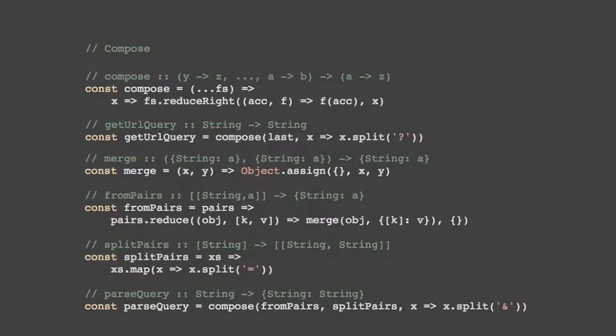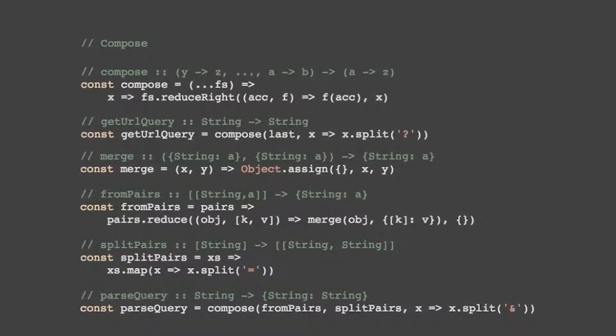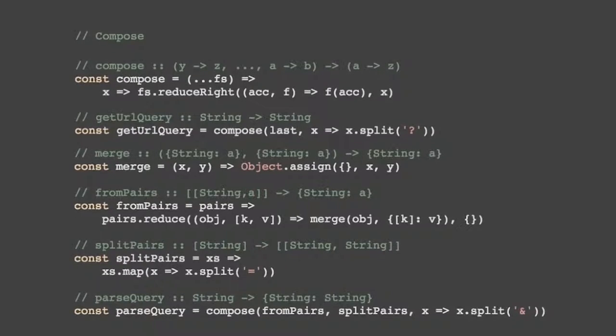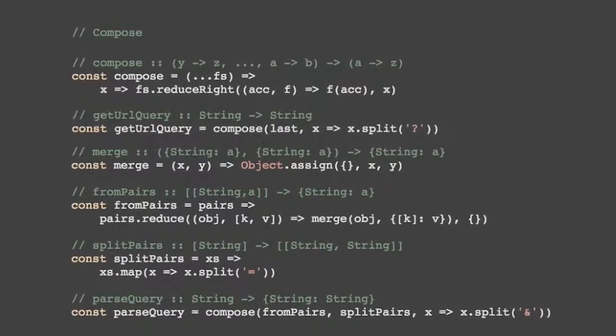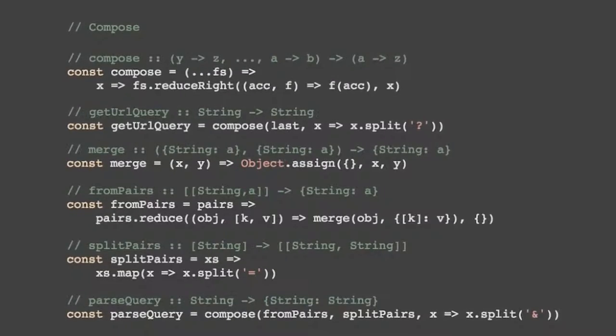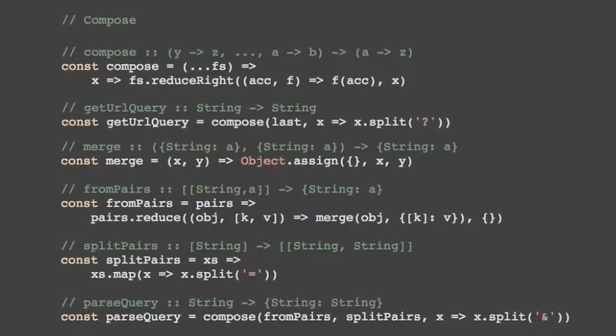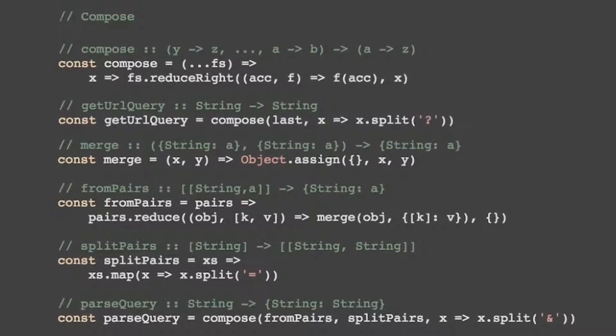We can add a few more functions here. Merge is just a shorthand for object assign that doesn't change any of the objects. fromPairs is a very useful way of taking a list of key-value pairs in an array and returning an object. And finally, splitPairs just takes a list of strings and splits each of them by equal sign.